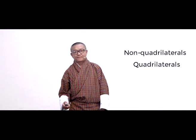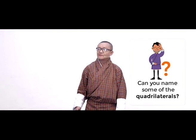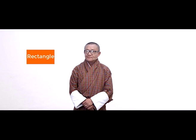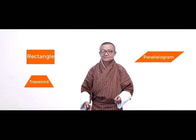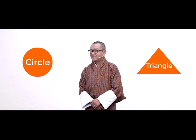Okay, children, in your last lesson you have learned about non-quadrilaterals and quadrilaterals. Can you name some of the quadrilaterals? Rectangle, parallelogram, trapezoid, and kite. And non-quadrilaterals: circle, triangle.